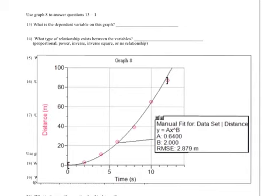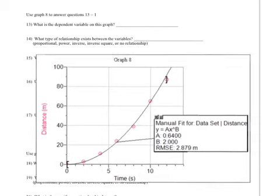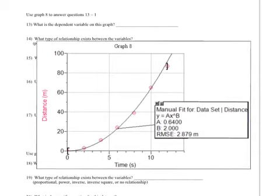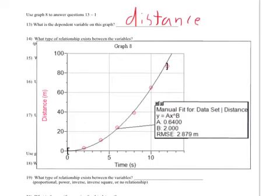What is the dependent variable on this graph? The dependent variable is the one that goes up the side, so in this case it would be distance. What type of relationship exists between the variables? If I look at it, I see there is definitely an upward curve to it, and that is indicative of a power relationship.